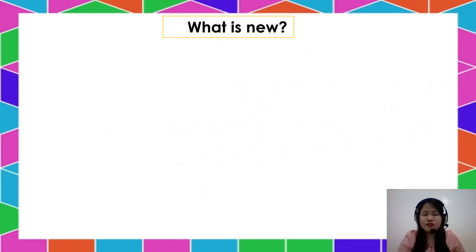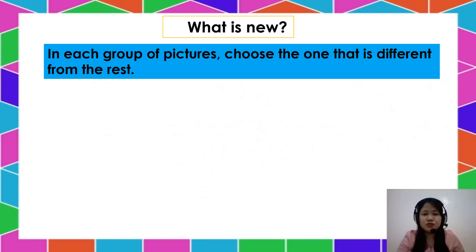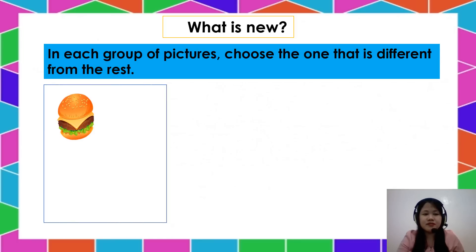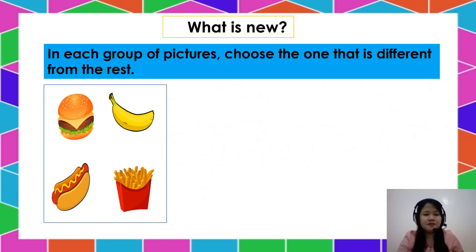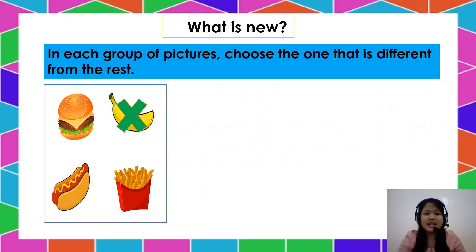Let's have our new lesson for today. In each group of pictures, choose the one that is different from the rest. I have here burger, banana, hot dog sandwich, and french fries. Which among this group of food does not belong to the group? That is the banana. Banana doesn't belong to the group that is unhealthy because banana is a healthy food, or this food can be eaten in the fast food while banana is not.